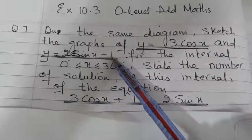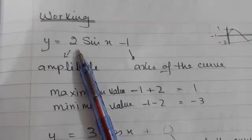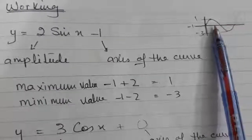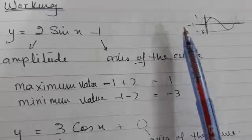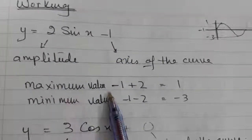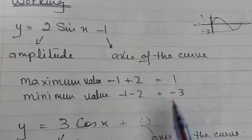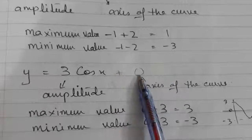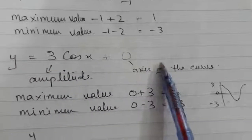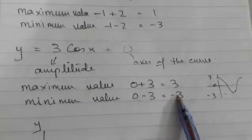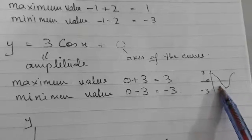For 2sin x minus 1: minus 1 is the axis of the curve and 2 is the amplitude. Minus 1 is the central line, above and below which the distance to the maximum and minimum is equal — that distance is the amplitude. Maximum value is calculated by adding and minimum by subtracting, giving maximum = 1 and minimum = -3. For the second curve y = 3cos x, there is no constant term, so the axis of the curve is 0. Amplitude is 3, so maximum = 3 and minimum = -3.